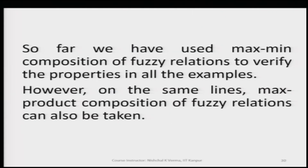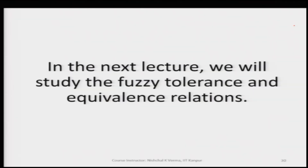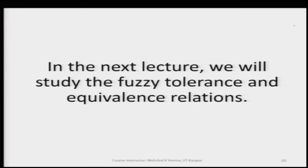So far we have used max-min composition of fuzzy relations to verify the properties in all the examples. However, on the same lines, max-product composition can also be used. This way we have seen all four properties — associativity, distributivity over union, weak distributivity over intersection, and monotonicity — with respect to the composition of fuzzy relations. In the next lecture, we will study fuzzy tolerance and equivalence relations.